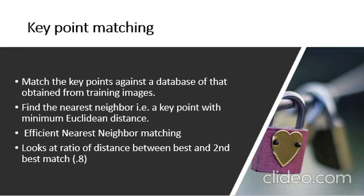In this case, the ratio of the closest distance to second closest is checked. If this ratio is greater than 0.8, they are rejected. This eliminates around 90% of false matches while discarding only 5% of correct matches, as mentioned in the paper.